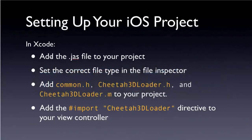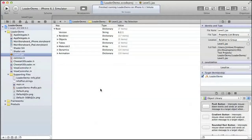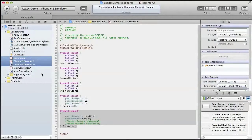We've added the file to our project and set the correct file type in the File Inspector. Now we need to add Common.h, Cheetah3dLoader.h, and Cheetah3dLoader.m to the project. I've gone ahead and done that already, so you can see those three files are here.